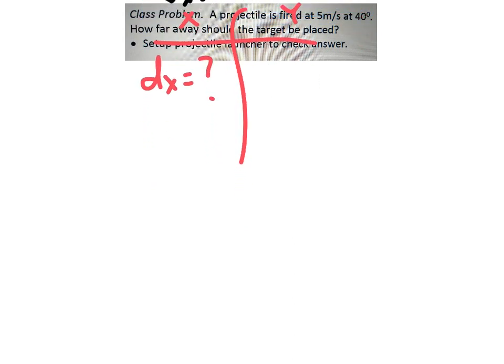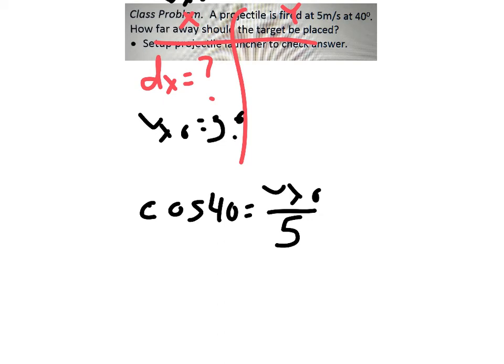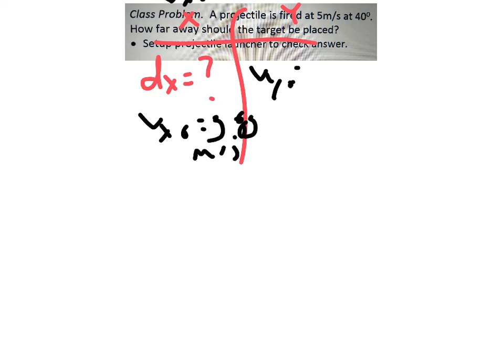So because Vx0 was adjacent, we would do cosine. So we're going to do cosine 40 equals Vx0 over the hypotenuse, which is 5. So Vx0 is going to be 5 times cosine 40, which is about 3.83 meters per second. So that was given to us, and the problem is 5 meters per second at 40 degrees. So we had to do some math to get that number, but it was given to us. We just had to do an extra step.